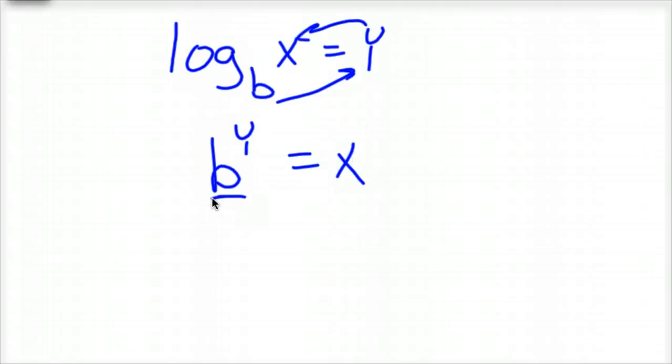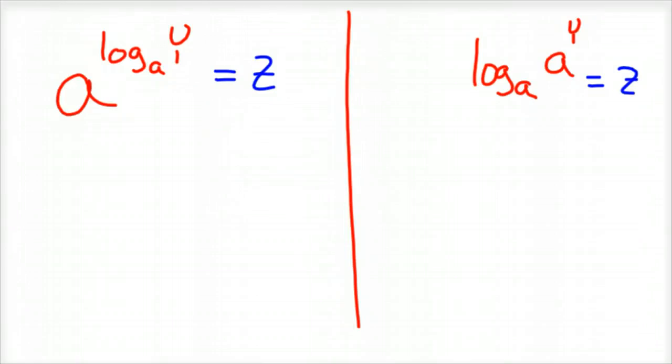A logarithm of any base of X equals Y is B to the Y equals X. Where, you know, that's the base of your logarithm. This is your exponent. Those are the two things you need to know.